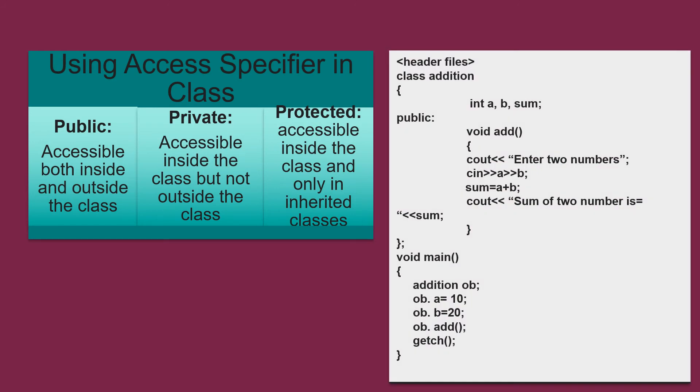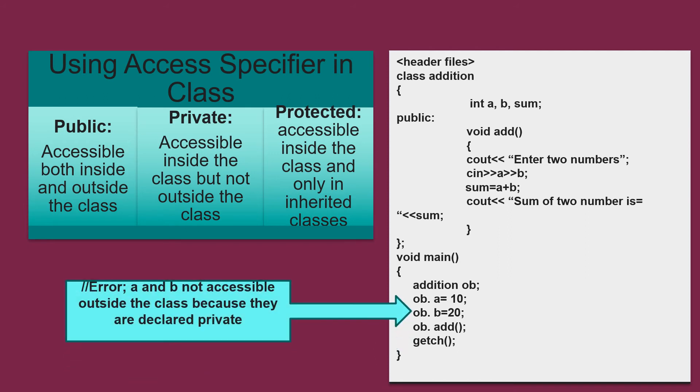Let's take an example. Here your data members, that is A, B and sum are private. If you try to access them outside the class, you will get an error. Data members are private and are not accessible outside the class.